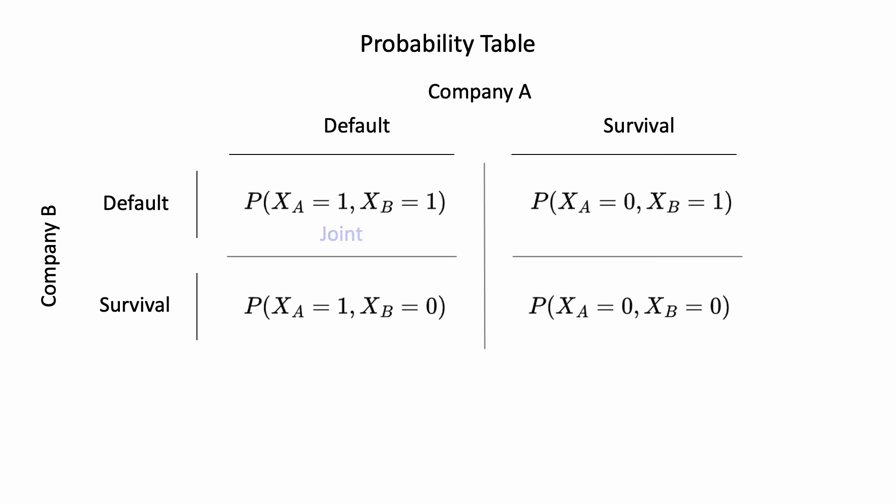When both default, according to our definition, the probability is the joint probability. We can also ask ourselves what's the default probability for company B, irrespective of the outcome of company A. That should be the sum of the first row, and it's called the marginal probability. The word marginal is literal, because in the past, people wrote this sum on the margin of the paper.